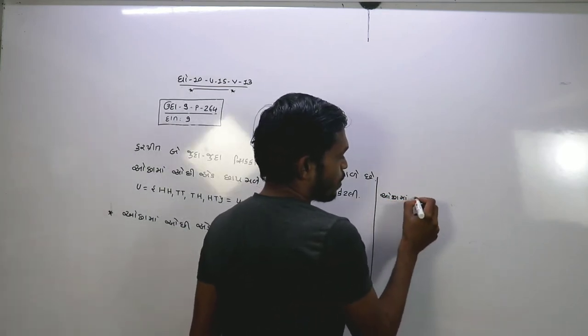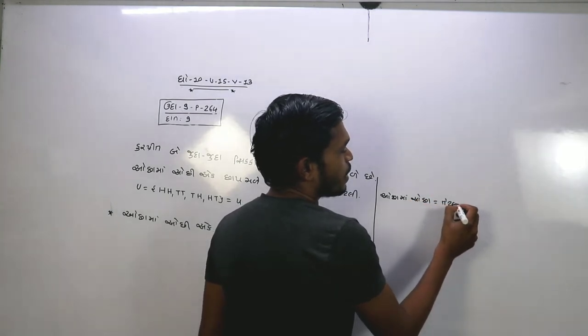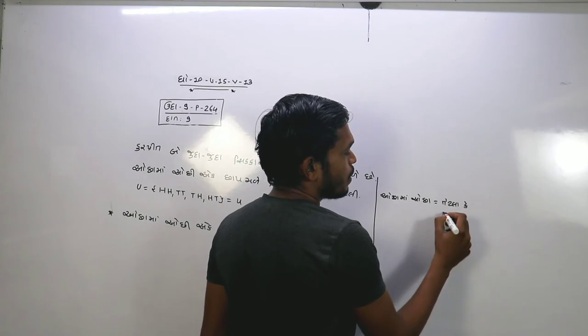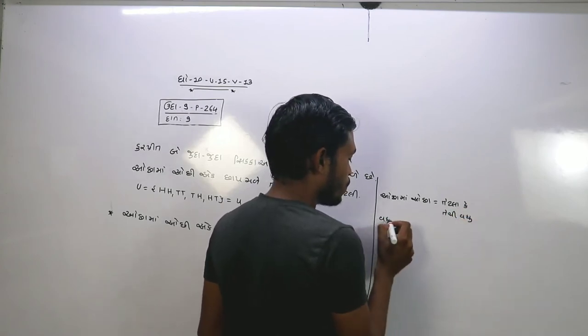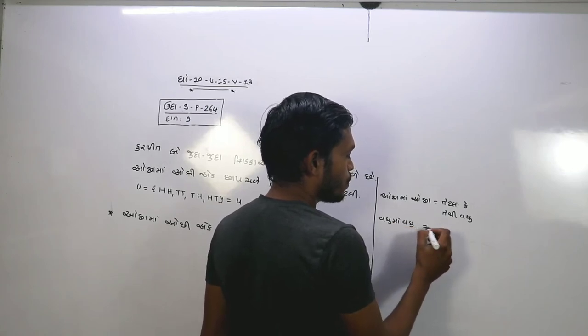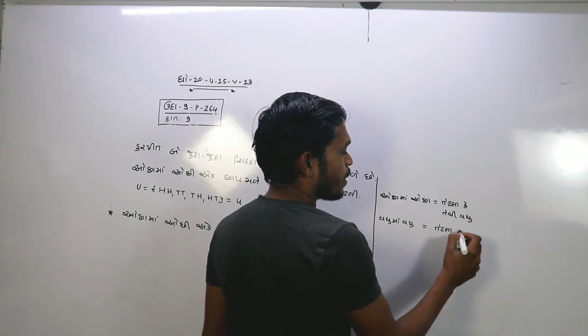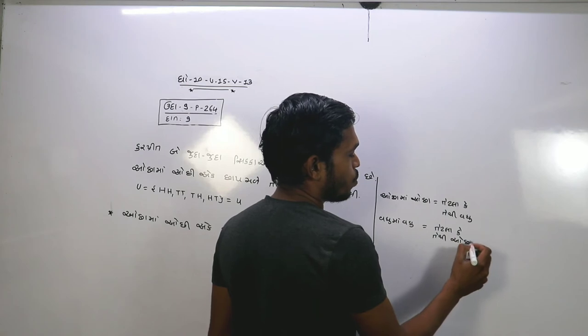ઓછા માં ઓછા ઇકોલ ટુ તેટલા કે તેથે વધુ વધુ વધુમાં વધુ બરબર તેટલા કે તેથે ઓછા